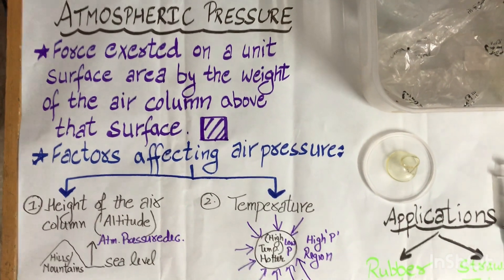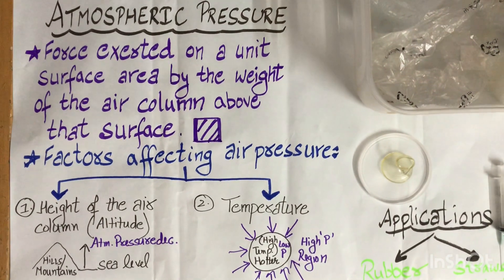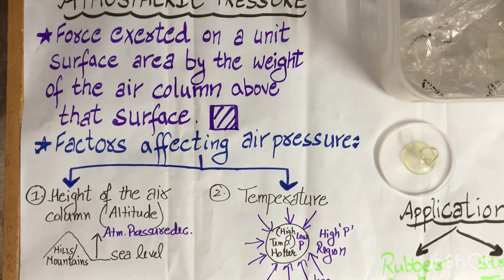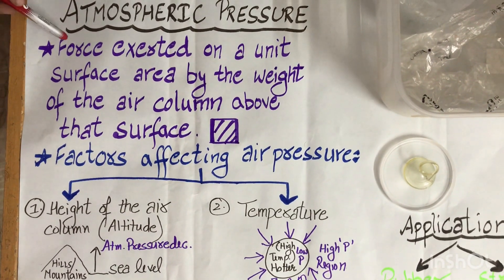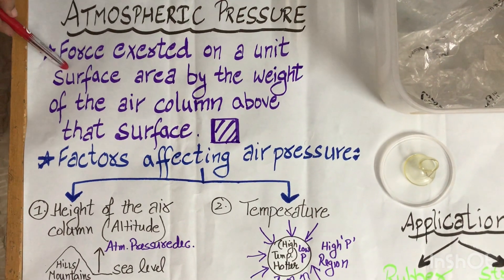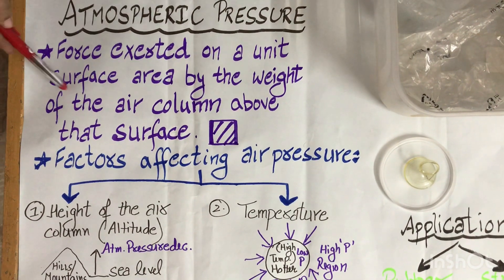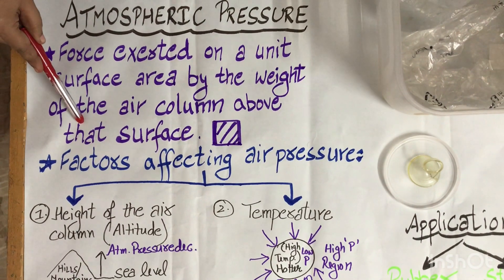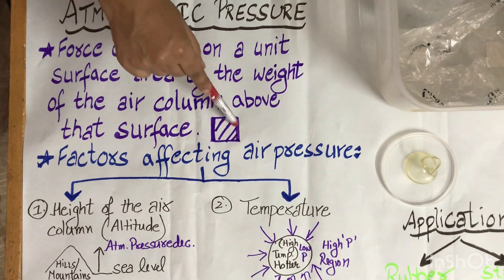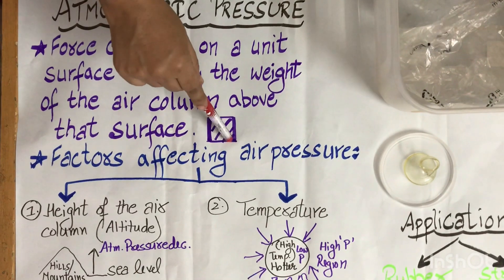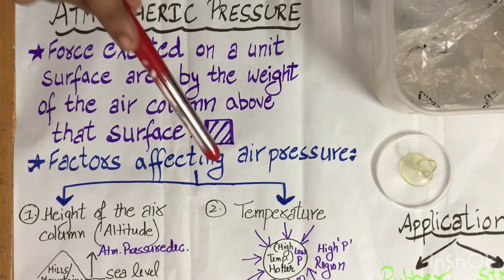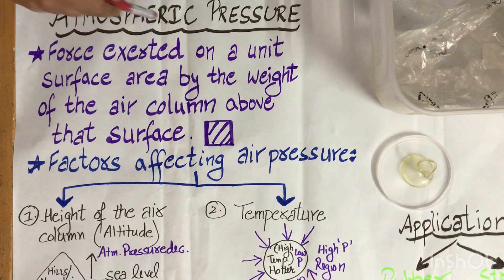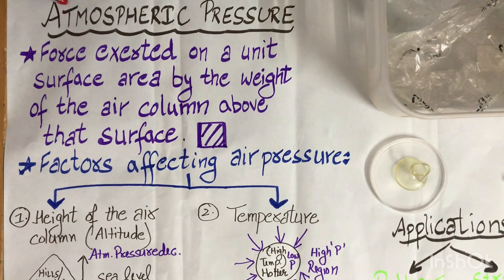Hello students! I am back with another set of interesting activities related to atmospheric pressure. Atmospheric pressure is the force exerted on a unit surface area by the weight of the air column on that surface or above that surface. If we consider a unit surface area, all the air above it is exerting some pressure on it, and that pressure is called atmospheric pressure.